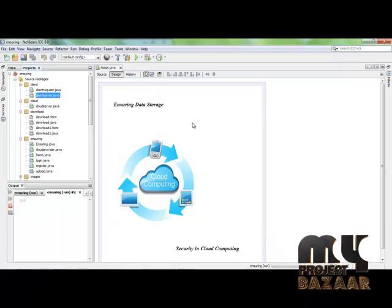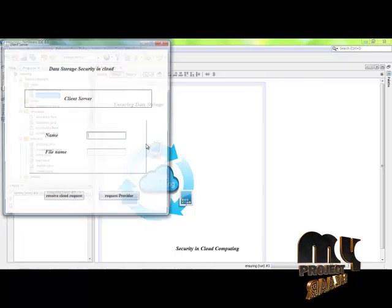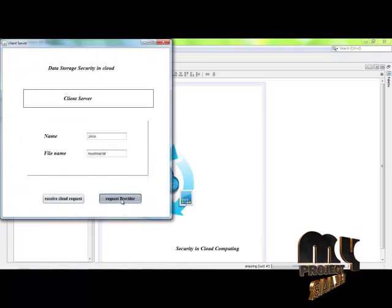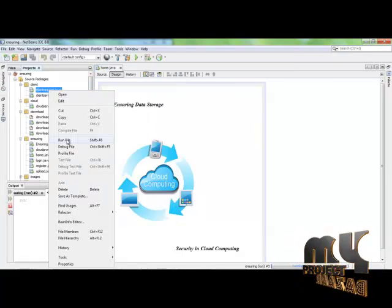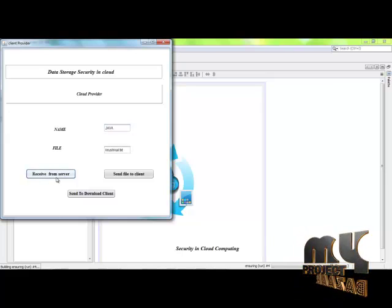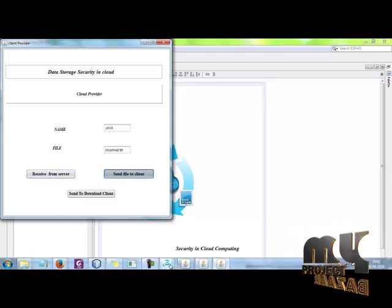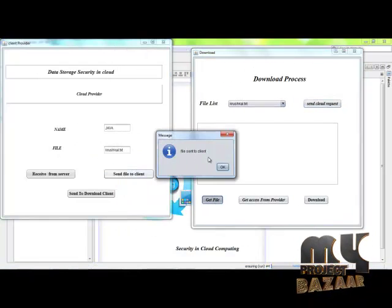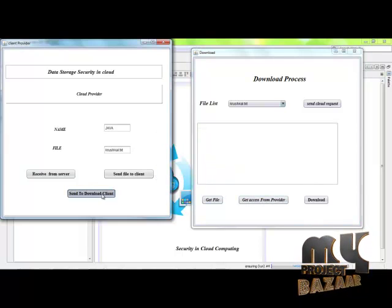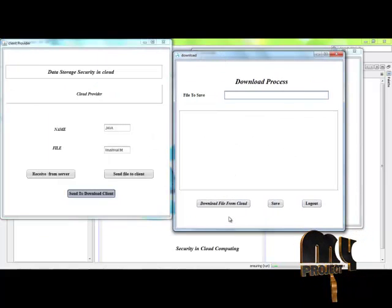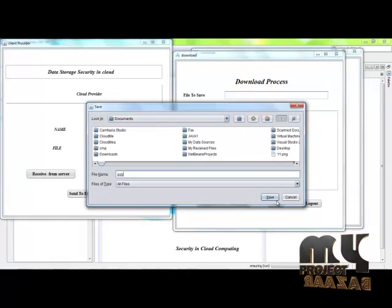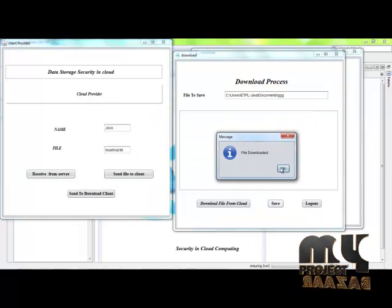Click on client server. Receive the request from the client and request the provider. The file can be sent to the client, file can be decrypted, and the file can be downloaded. Thank you.